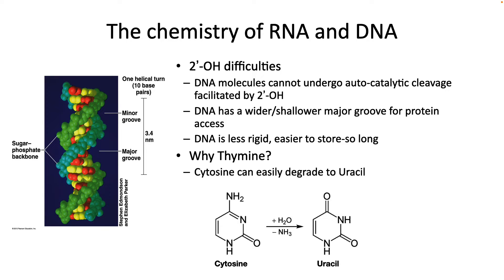Now, you've been told about those differences, but have you ever wondered why there are these differences, or why cells have both DNA and RNA? It turns out that the 2' hydroxyl is a troublemaker, and can cause autocatalytic cleavages at a high enough rate to be a nuisance. In addition, the absence of that 2' hydroxyl makes for a wider, shallower groove in the DNA, which is better for protein access. Finally, the lack of an OH makes DNA less rigid and easier to store — this flexibility is essential when you want to organize your chromosome.